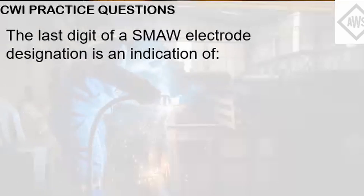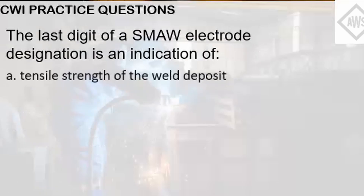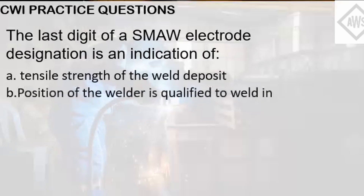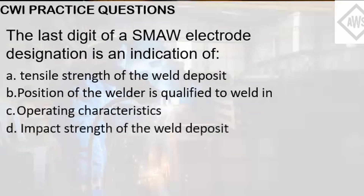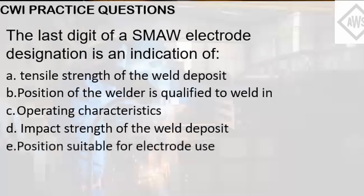The last digit of a SMAW electrode designation denotes the operating characteristics of an electrode. It indicates the type of current, arc characteristics and penetration, the type of covering and slag, and percentage of iron powder used. It also denotes if the electrode is low hydrogen type or not — endings of 5, 6, and 8 denote low hydrogen electrodes. Hence, the answer here is Letter C, Operating characteristics.